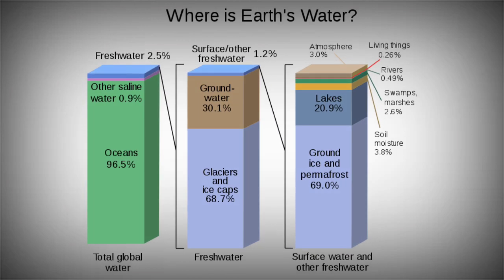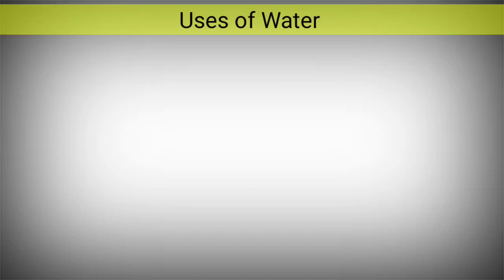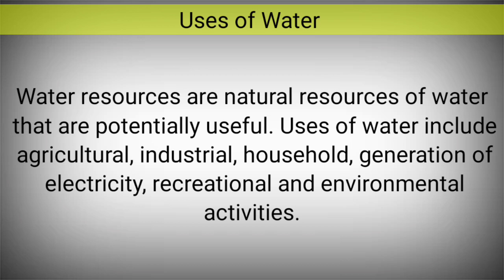In the figure, you can see that freshwater is divided into surface water, groundwater, and glaciers and ice caps. Freshwater is available to us in two ways: surface water and groundwater. Surface water includes rivers, lakes, and ponds, while groundwater is present inside the earth's surface.